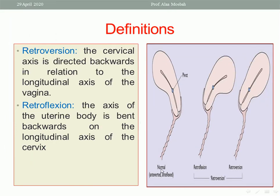What about retroversion and retroflexion — our topic today? In retroversion, the cervical axis is directed backwards in relation to the longitudinal axis of the vagina. What about retroflexion? Retroflexion means the uterine body is bent backward on the longitudinal axis of the cervix. This is the longitudinal axis of the cervix, and the body is bent backward.